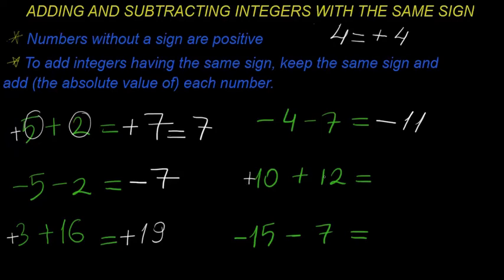This is actually positive ten. Positive ten plus twelve will give a positive number, so ten plus twelve equals twenty-two. Finally, negative fifteen minus seven will be negative — because we have two negative signs — so fifteen plus seven equals twenty-two, and the answer is negative twenty-two.